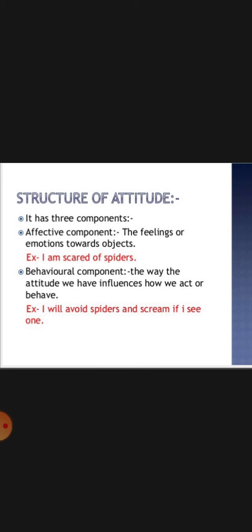Now let us look at the structure of attitude. It has three components. The first is the affective component — the feelings or emotions towards an object. For example, if someone is afraid of spiders, that fear is their affective component. That is why you feel afraid of spiders — that is the effect of the affective component.